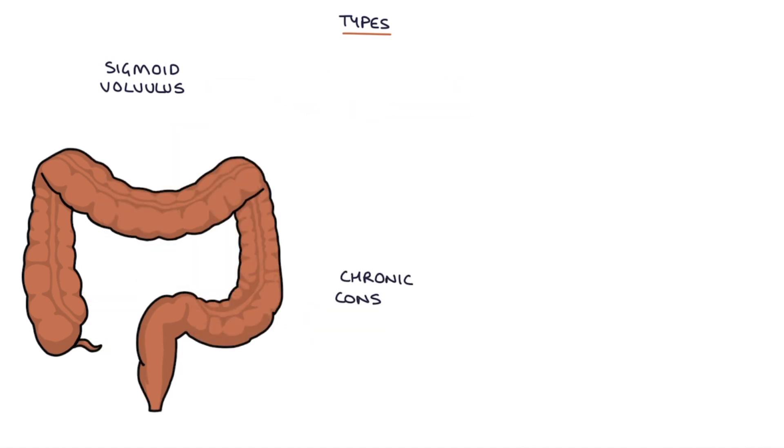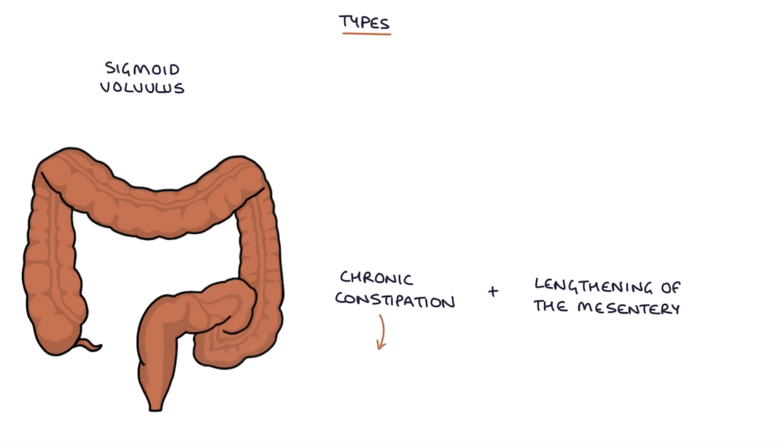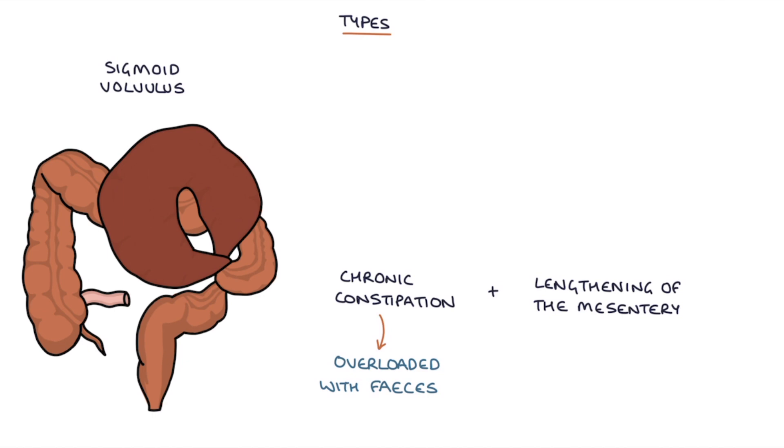A key cause is chronic constipation and lengthening of the mesentery attached to the sigmoid colon. The sigmoid colon becomes overloaded with feces causing it to sink downwards and then causing it to twist. A sigmoid volvulus is also associated with a high fiber diet and the excessive use of laxatives.